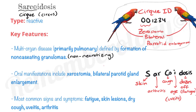So to recap: the circ ID starts with zeros, meaning xerostomia, and it has bilateral parrots for bilateral parotid enlargement. In SARCOIDOSIS, S is skin, R is arthritis, CO is cough, I is inflammation of the uvea, and DOSES is 'doses off' for fatigue.